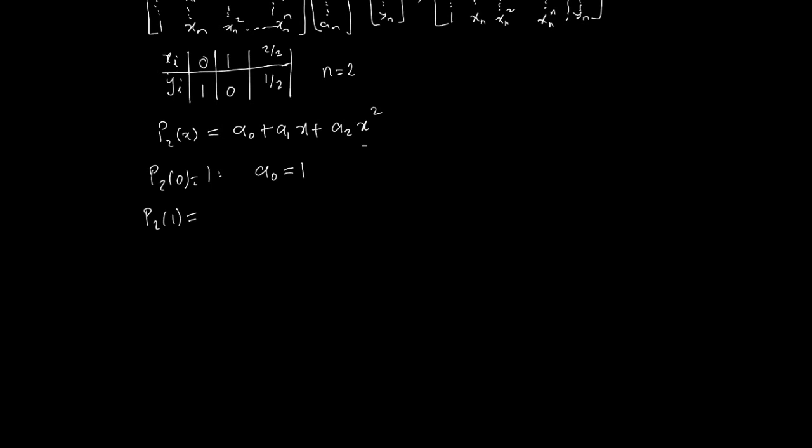And similarly, p2 of 1 should be equal to 0, which means we have a0 plus, x is 1 now, a1 plus a2, and that's supposed to be equal to 0. And the last one, p2 of 2 thirds should equal a half, which means we'll have a0 plus 2 thirds a1 plus 4 ninths a2 equals a half.